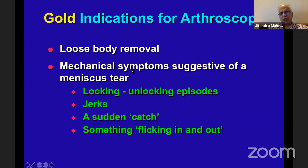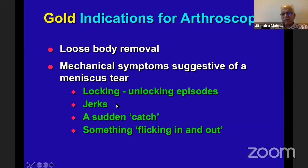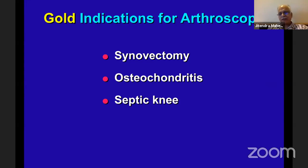If it is pain with a meniscus tear but no mechanical symptoms, going for arthroscopy just for pain in a simple meniscus tear — sometimes they don't do better. You have to be sure there is something you can cure. Mechanical symptom: go for it. Pain only, without mechanical symptoms: be more cautious. Other gold indications include synovitis — you can do very good synovectomy and relieve the patient. Osteochondritis visible on MRI, a loose body flap causing synovitis, and septic knee — all are gold indications.